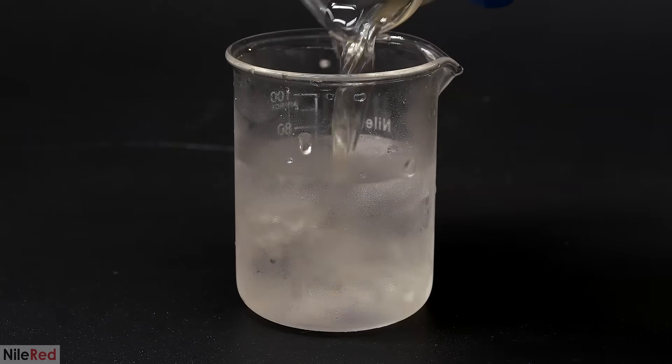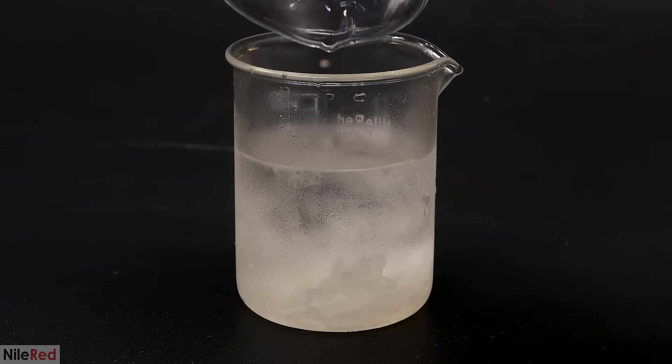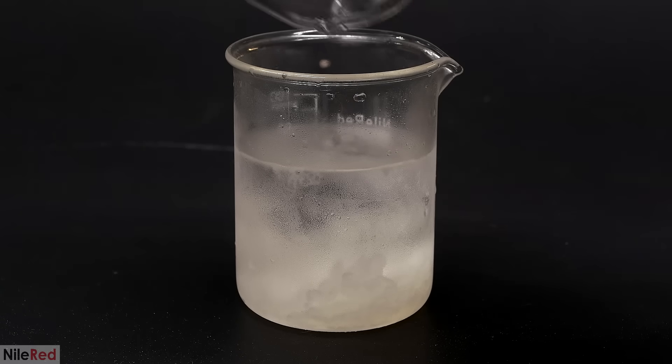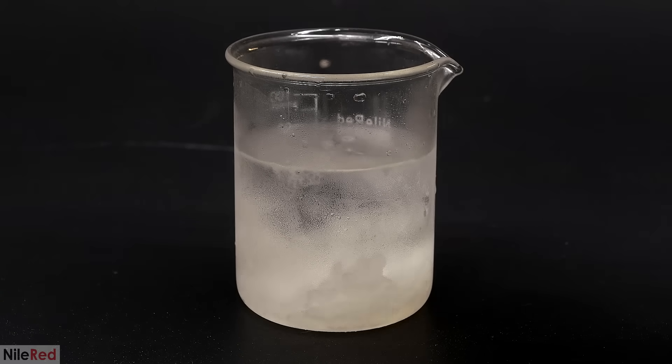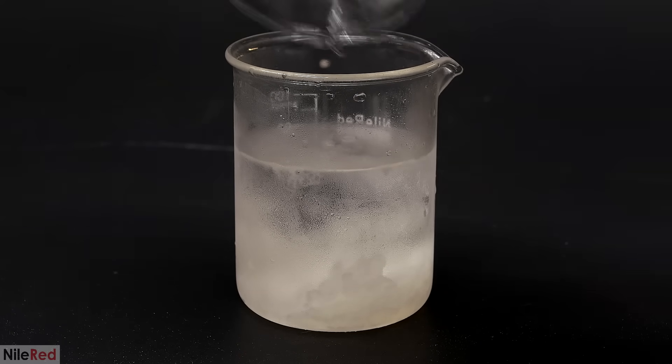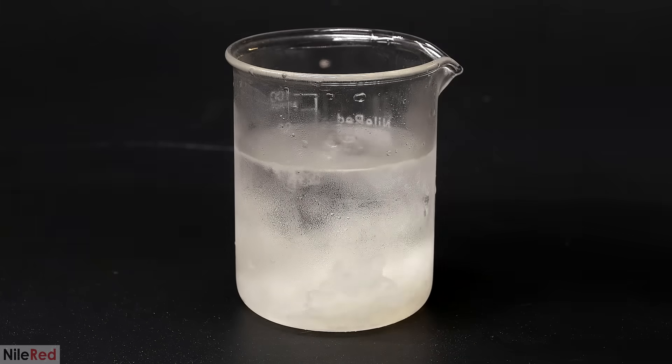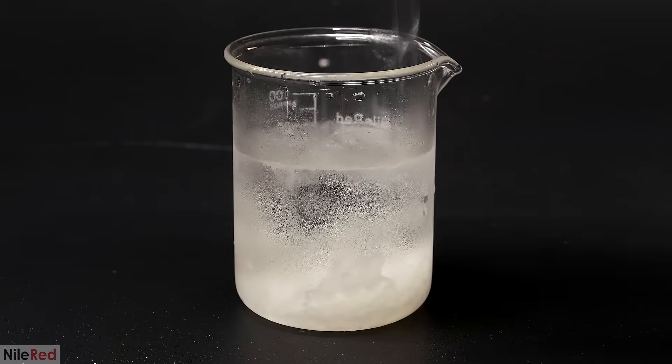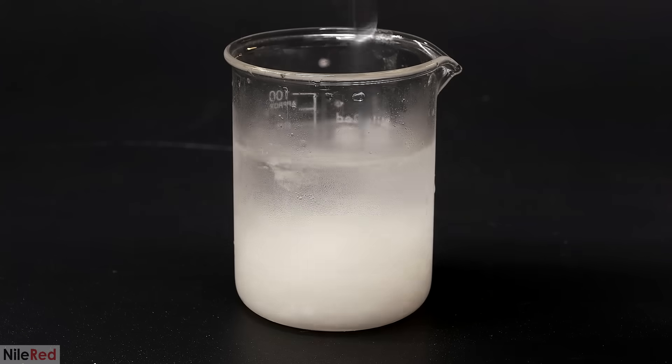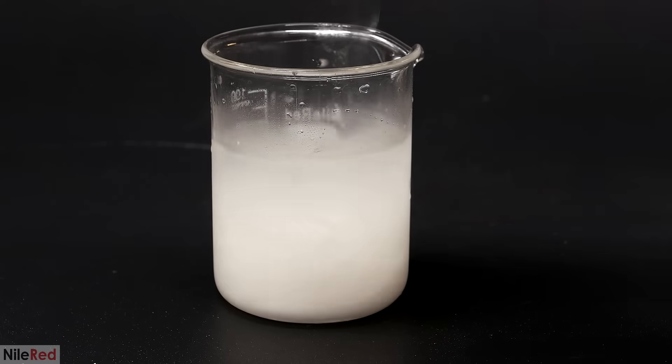While still hot, everything was dumped into 75 milliliters of ice-cold water. Very quickly, we see something crystallize out, and this is the chlorobutanol. I mix things as thoroughly as possible, and you can see that we have quite a bit of white solid now.